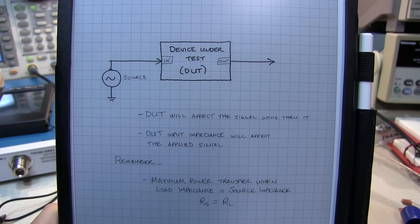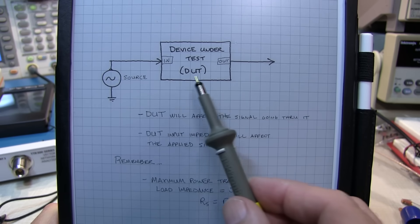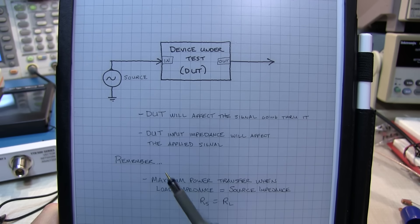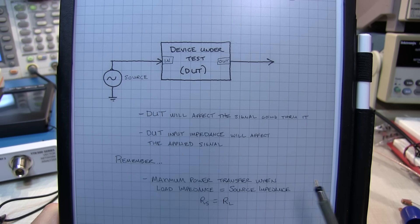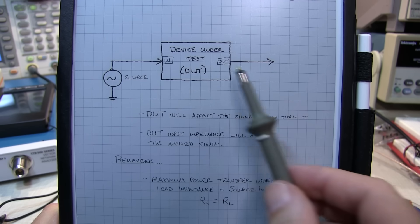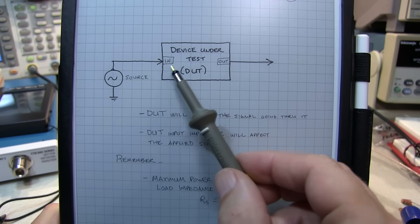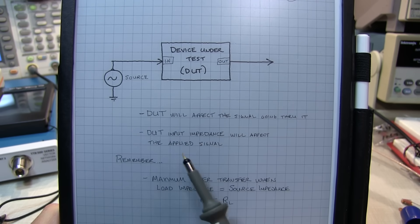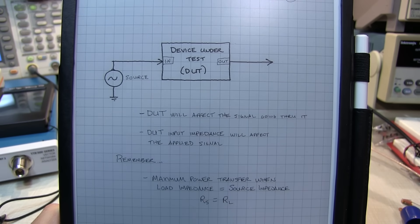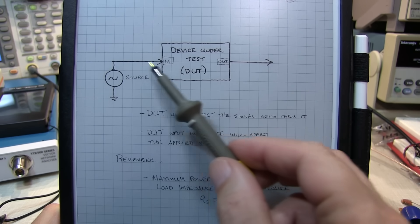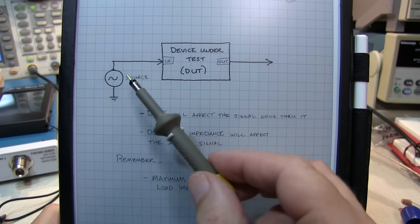A vector network analyzer is used to characterize RF devices, and that could be something as simple as a filter, an amplifier, or even an antenna. It's typically done by applying a source to that device and then measuring what happens. The device under test will certainly affect the signal going through it, but also the input impedance characteristics of the device will affect what's being applied to it. So it's really important to characterize what the device does to a signal going through it and what kind of load it presents to the source.